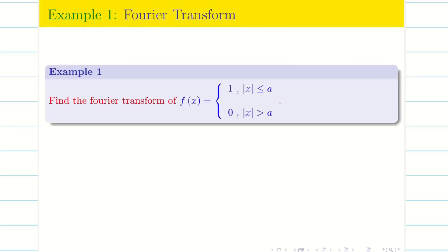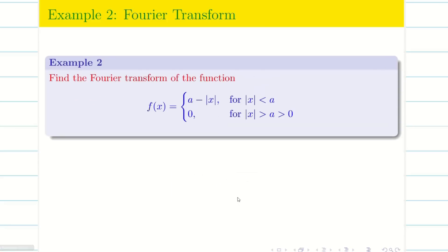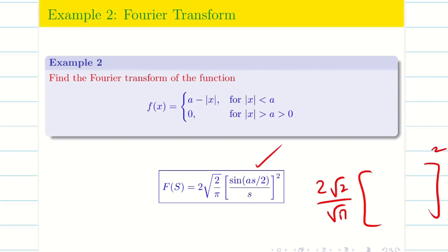In the first three videos we dealt with these problems. We took the function f(x) equal to 1, and when I apply Fourier transform of f(x), that is capital F(s), I get an answer like square root of 2 by pi times sin(as) by s. In the second problem we took a minus mod x, and the answer is 2 times root 2 divided by root pi times sin(as/2) by s whole square.